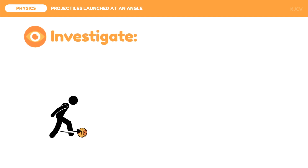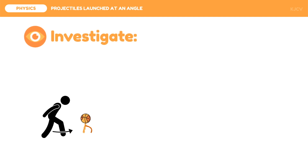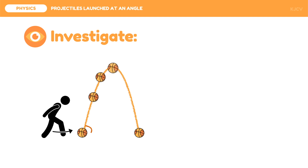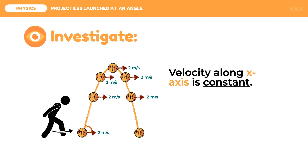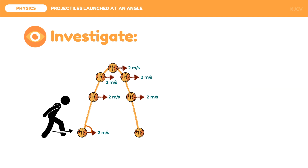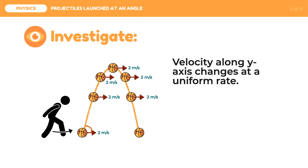Let us look at the scenario in which a person kicked the ball at a certain angle. On all occasions the ball at different times, its velocity is 2 meters per second. That's what we know from our previous discussion that the velocity along the x-axis is constant. Now, let's look at the velocity along the y-component. We know that the velocity along the y-axis changes at a uniform rate.